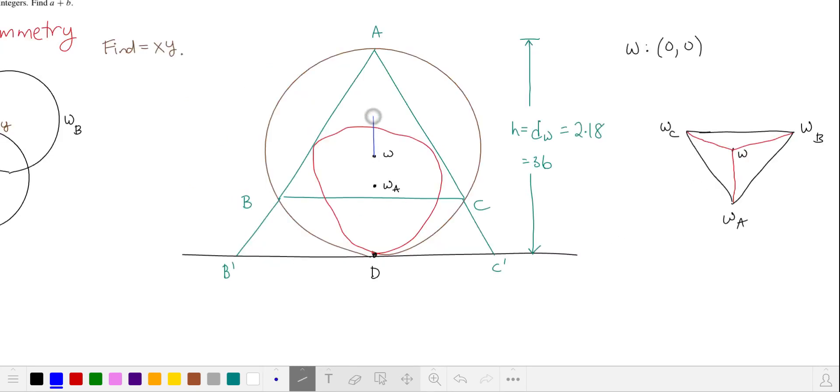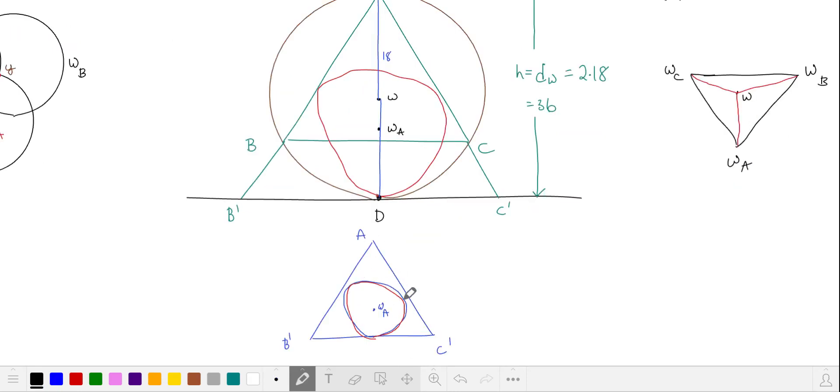Since the radius of our circumcircle is 18, the distance from omega to point a is 18. We also have the distance from omega to point d is 18. Since omega a is the center of this end circle of triangle a, b', c', omega a is the center of this triangle.